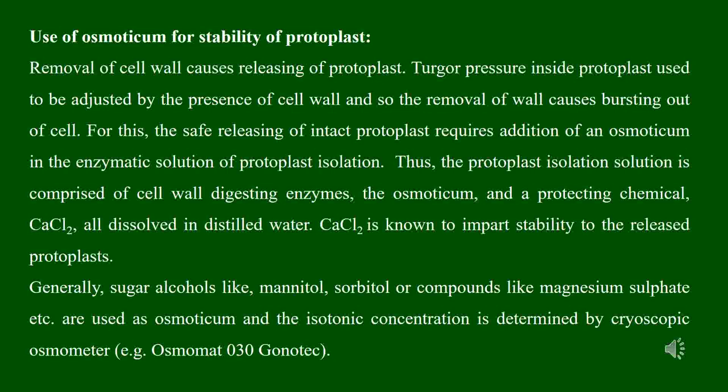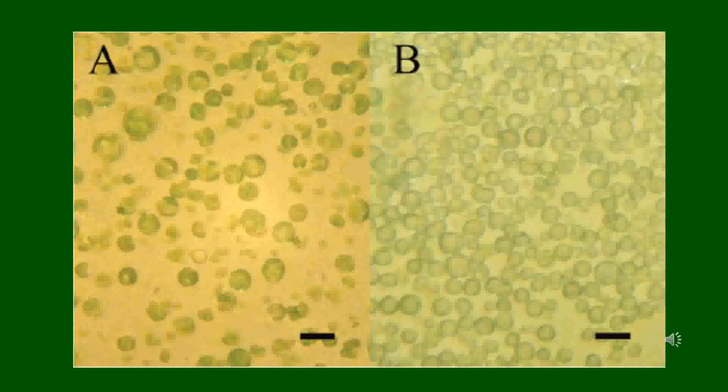Sugar alcohols like mannitol and sorbitol, as well as compounds like magnesium sulfate, are used as osmoticum. The desirable isotonic concentration of the osmoticum is determined by a cryoscopic osmometer. The isolated protoplasts appear very globular in shape and come in different dimensions.